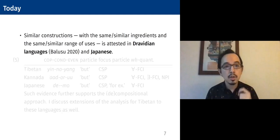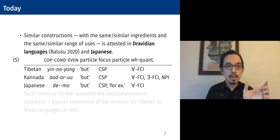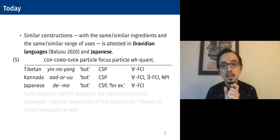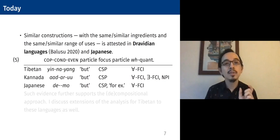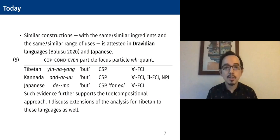So for example, just as we saw in Tibetan, we have this copular conditional even order together in yinang. In Kannada, a Dravidian head-final language, we have exactly that same morphology for a counter-expectational 'but,' a concessive scalar particle, and for universal free choice items together with a WH, but also for some other uses. And in Japanese we have the form 'demo,' which is a little bit less transparent in its morphology, but it also is the way to express 'but' — the counter-expectational — is also a concessive scalar, and also forms universal free choice items together with WH.